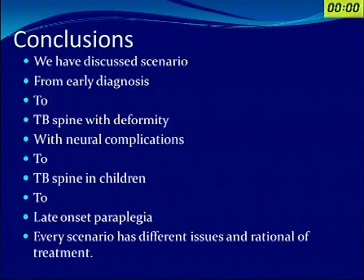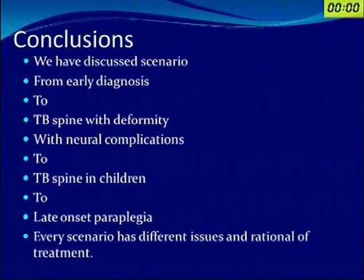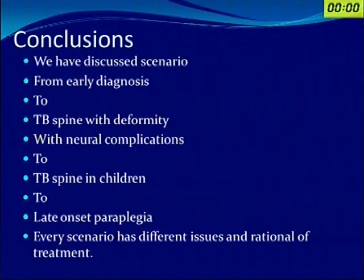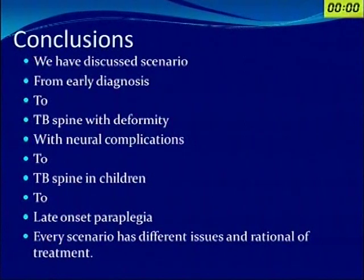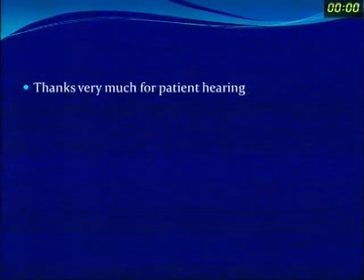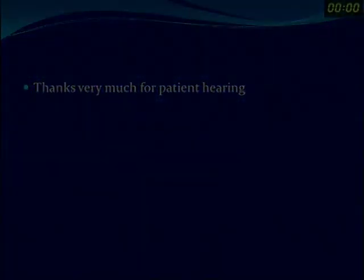So, friends, to conclude: I have discussed scenarios from early diagnosis to TB spine with deformity and neural complications, to TB spine in children, to late-onset paraplegia. Every scenario has different issues and rationale of treatment, and we have to have a different consideration for every patient. Thanks very much indeed for your patient hearing.